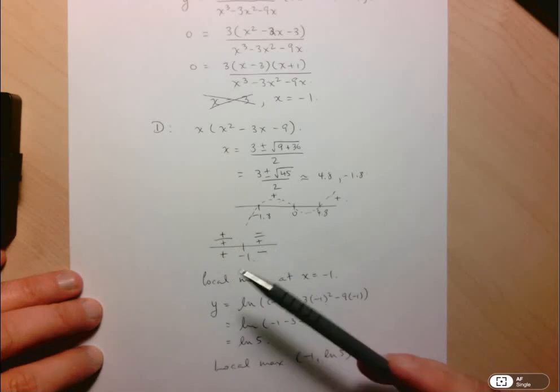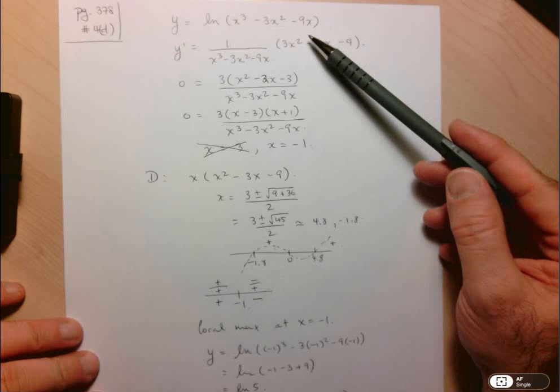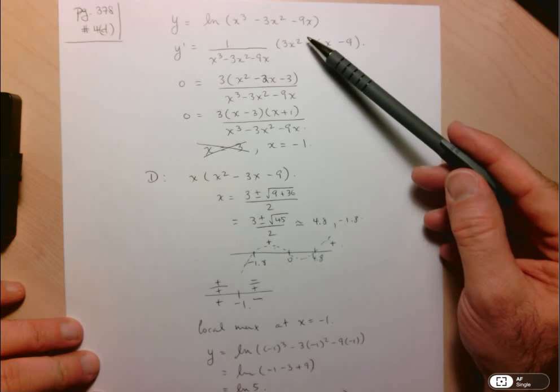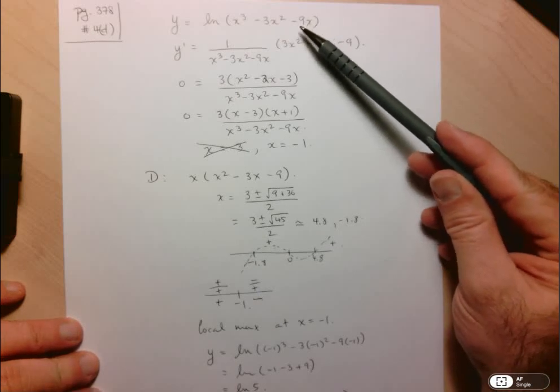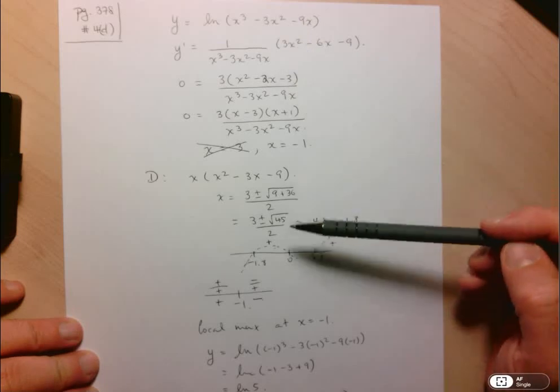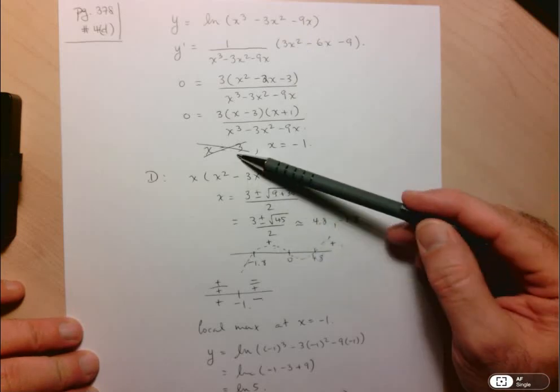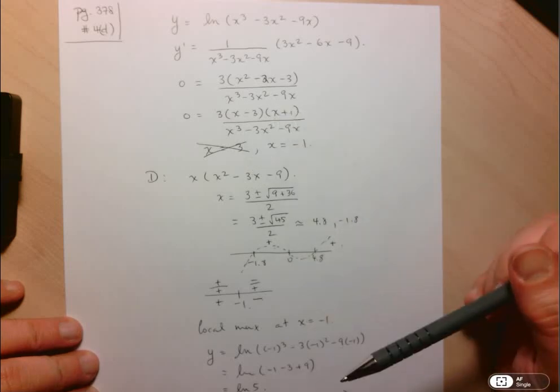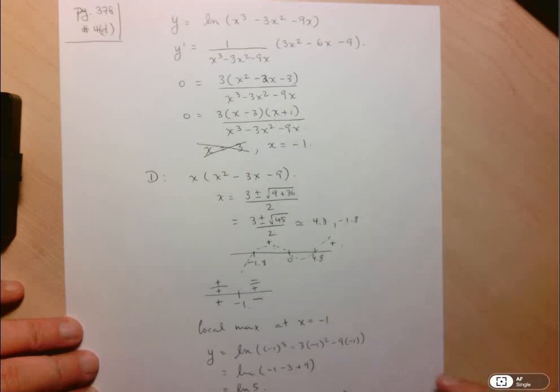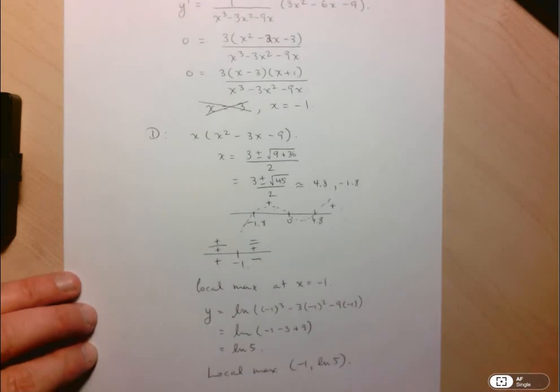What was different in this problem here is that because we have a function that's not defined over all real numbers or where the discontinuities are very clear, we needed to do some work to determine the actual domain of the function. And that eliminated one of the values that made the derivative equal to 0. So again, I'll just pan out so that you can see the full solution. That's it.